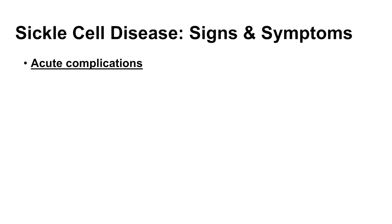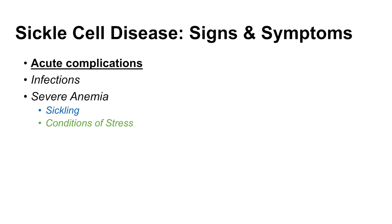What are some of the signs and symptoms of sickle cell disease? Some of the acute complications include an increased risk of infections. Because of the sickling of red blood cells, patients can experience severe anemia. Sickling occurs during conditions of stress, which can include fever, infection, dehydration, hypoxia, and acidosis. Anything that leads to further deoxygenation of hemoglobin S can lead to sickling of the red blood cells, which can lead to complications.